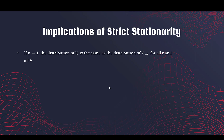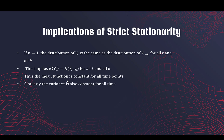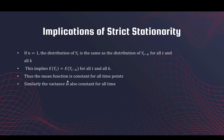Let's look at some implications. If we choose n equal to 1, then the distribution of yt and any other time point yt-k for any k is the same. So y1 and y10 have the same distribution, y1 and y5000 have the same distribution. If two variables have the same distribution, their expectation is the same — so the expectation of y1, y2, y3, y4 is all the same, meaning the mean function is constant for all time points. If you plot your time series, you should not see the mean evolving in time — it should be constant.